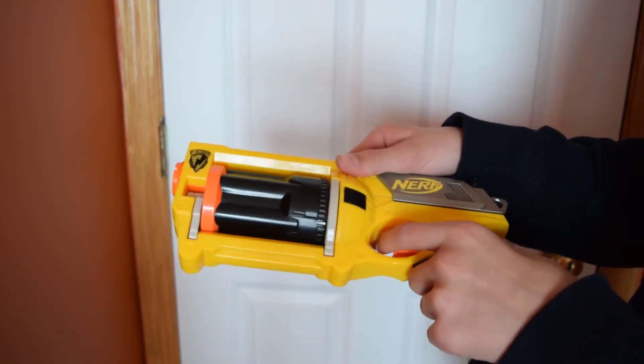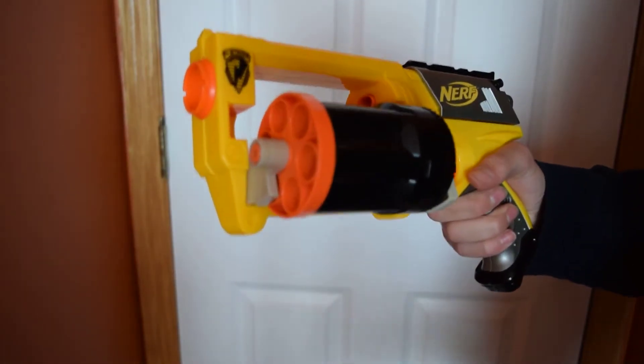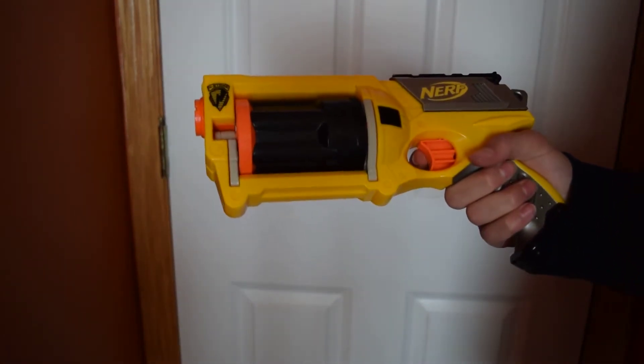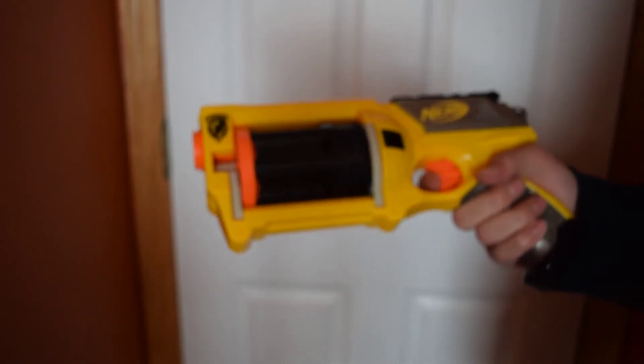But with practice you can also do it one handed. You just sort of twist it in and then shake the blaster to ensure that the rotation mechanism gets into the cylinder.